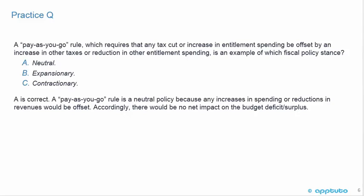A is correct. That's a zero-sum game. If you have a tax cut or increase in entitlement spending, but it's offset by an increase in other taxes or a reduction in other entitlement spending, then there's no net impact on the budget, deficit, or surplus — so that would be neutral. A pay-as-you-go rule is a neutral policy because any increases in spending or reductions in revenues would be offset, with no impact on the budget deficit or surplus.